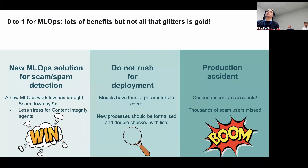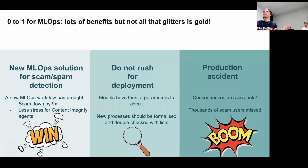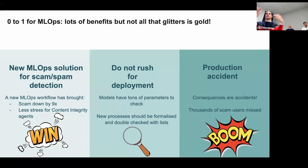Second question: what is a feature store? A feature store is like a database with already pre-prepared features for data scientists to use. A feature can be, for example, the length of a review — the number of characters, the number of words. The feature store provides this already computed, without the data scientist having to write code to extract it. Features are processed as data comes in, so a data scientist can look up a review ID and see all features connected to that review.